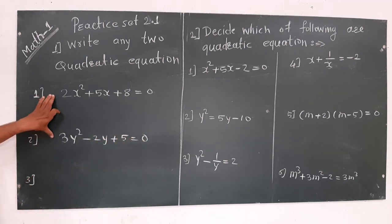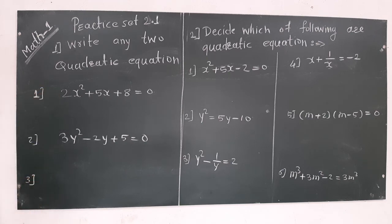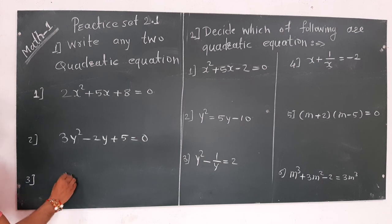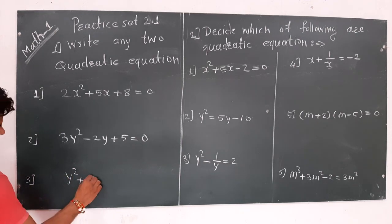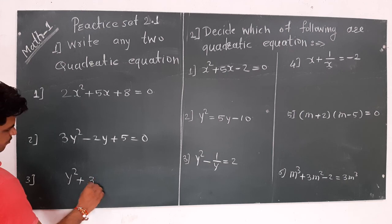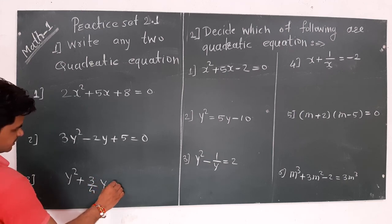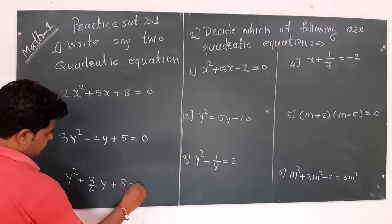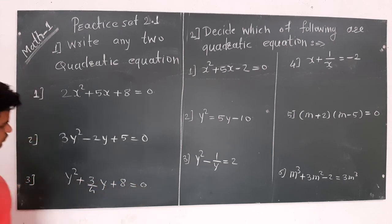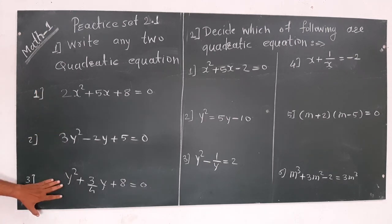We have to give only two equations here, but we give one more extra: y² + (3/4)y + 8 = 0. So these three are quadratic equations.